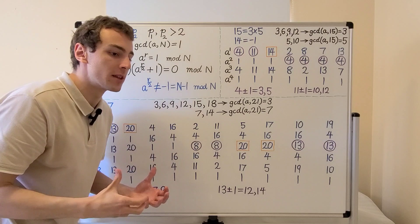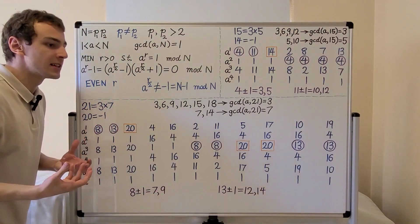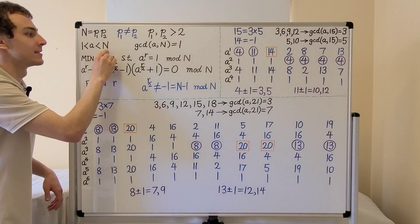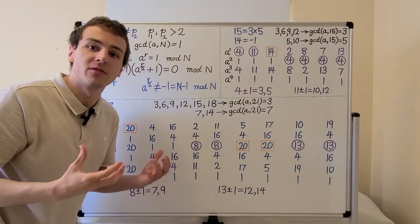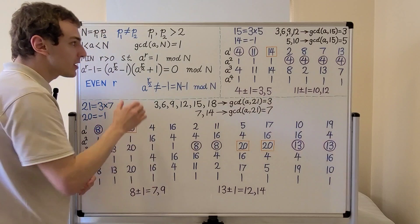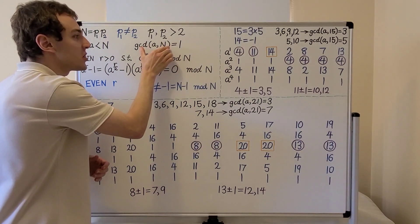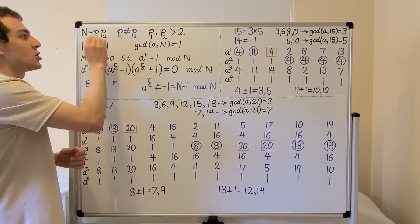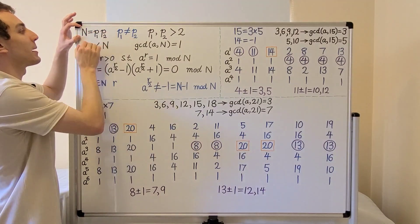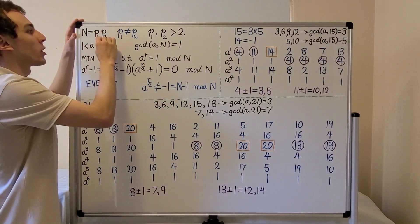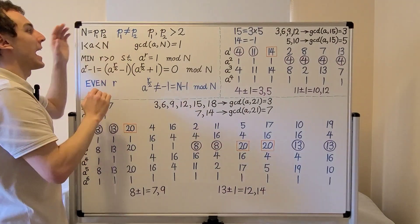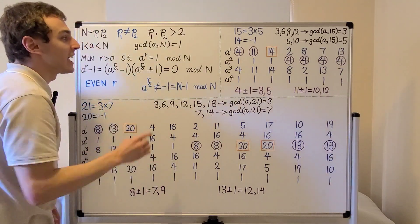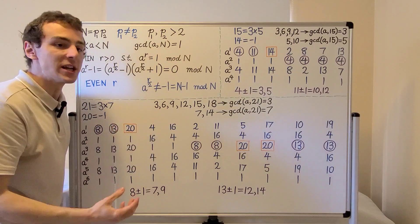Shor's factoring algorithm begins with a guess. We randomly select a value called a, a positive integer between 1 and n. Then we compute the greatest common divisor of a with n. If the GCD of a and n is greater than 1, we can identify that value as p1, and to find p2 we simply divide n by p1 to get the remaining prime factor.